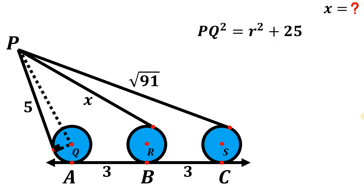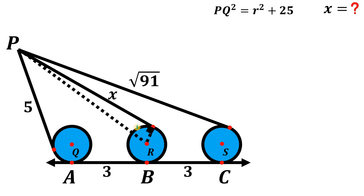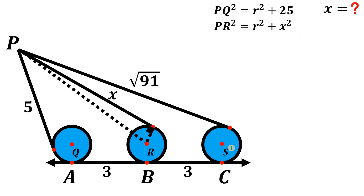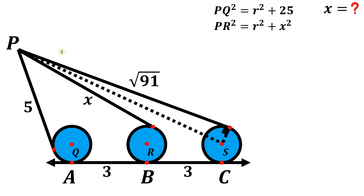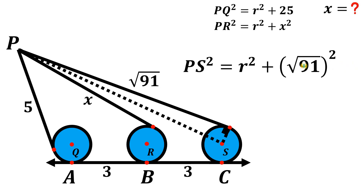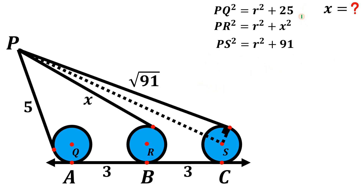Now focusing on circle R, we have a right triangle with sides r, x, and hypotenuse PR. By the Pythagorean theorem: PR² = r² + x². Doing the same for circle S, we have a right triangle with sides r, √91, and hypotenuse PS. So PS² = r² + (√91)² = r² + 91. We now have three equations relating PQ, PR, and PS to r.